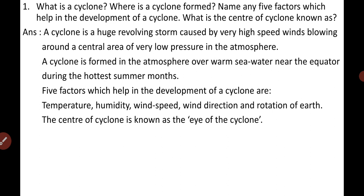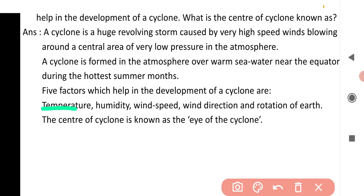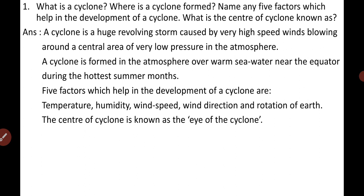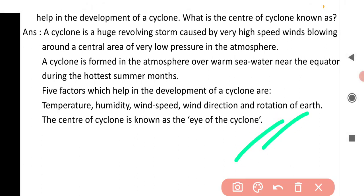Now the 5 factors which contribute to the development of a cyclone are: temperature, humidity, wind speed, wind direction, and rotation of the Earth. These 5 factors contribute to the development of a cyclone. And the center of the cyclone is known as the eye of the cyclone. Remember — eye of the cyclone. So this completes question number 1.